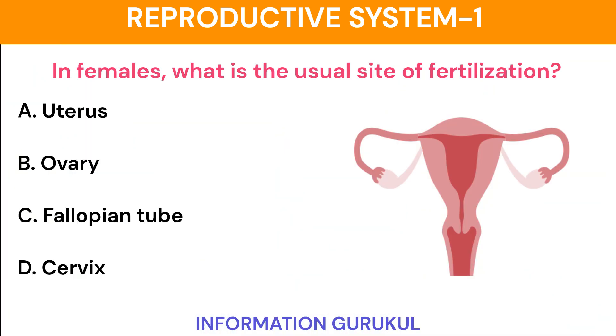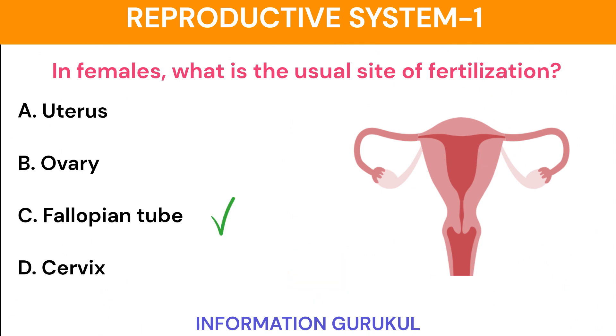In females, what is the usual site of fertilization? Fallopian tube.